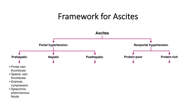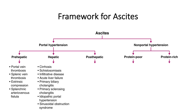Prehepatic causes of portal hypertension include thrombosis involving the portal vein and/or splenic vein. For intrahepatic etiologies, by far the most common cause is cirrhosis, especially in the industrialized world. Additional examples include schistosomiasis, acute liver failure, primary biliary cholangitis, and primary sclerosing cholangitis. Posthepatic causes include conditions such as heart failure, constrictive pericarditis, and Budd-Chiari syndrome, which is thrombosis involving the hepatic vein.